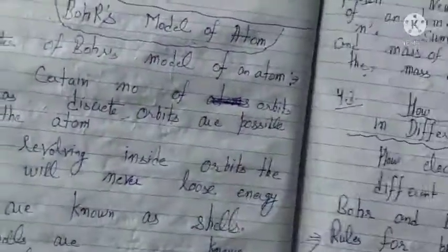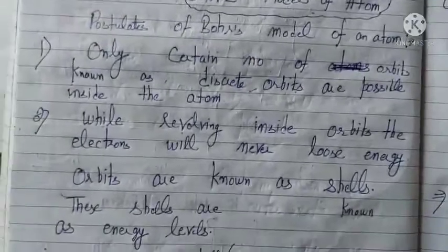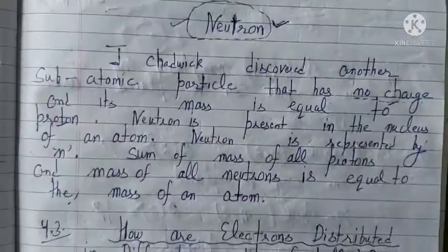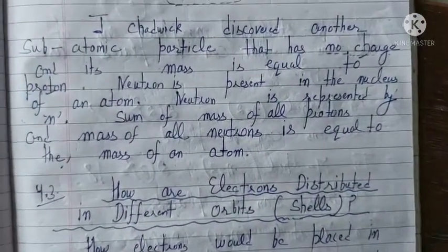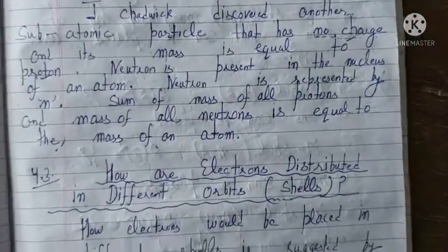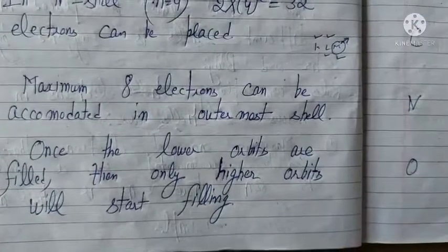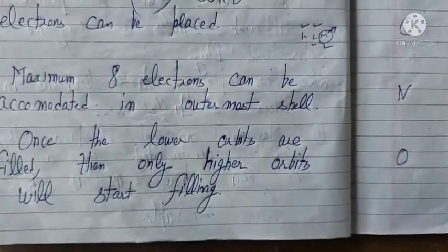To summarize: we studied Bohr's model of an atom — orbits or energy levels K, L, M, N are possible. J. Chadwick discovered the neutron, which has no charge but its mass is nearly equal to the mass of the proton, and it is present in the nucleus. The Bohr-Bury rules for placing electrons: maximum 2N² electrons per shell, maximum 8 in the outermost shell, and lower orbits fill first before higher ones. Thank you, have a nice day.